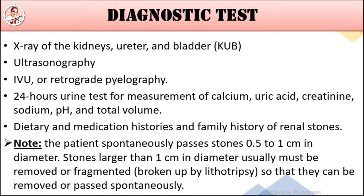24-hour urine test bhi kiya jata hai — for measurement of calcium, uric acid, creatinine, sodium, pH, and total volume. Yeh tests kiye jaate hain taake observe kiya jaye ke kya problem hai. Agar stone ke tukray aate hain to unhe check kiya jata hai ke kaunsa stone hai — calcium hai, phosphate hai. Dietary history aur medication history bhi li jati hai, family history dekhi jati hai.